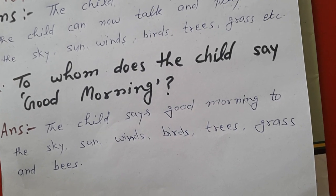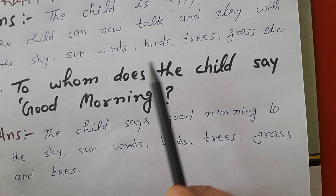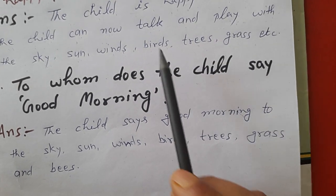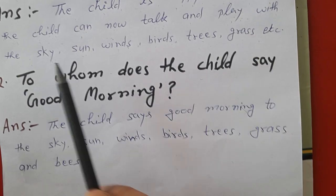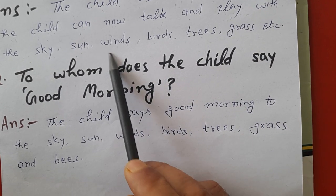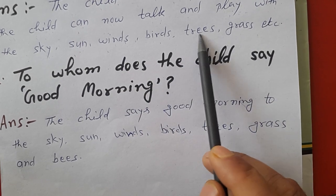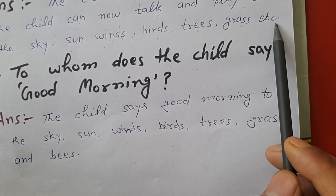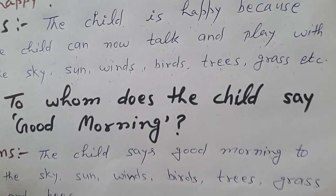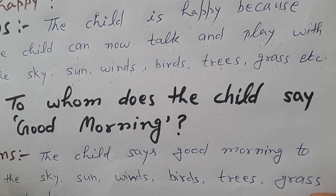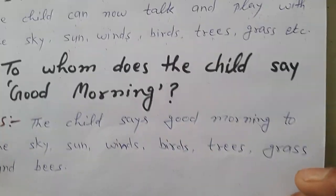Bacha isliye khush hai kyonki woh baat kar sakta hai aur woh khail sakta hai — sky, sun, winds, birds, trees, etc. In sab ke saath woh ab baat kar sakta hai aur khail sakta hai.